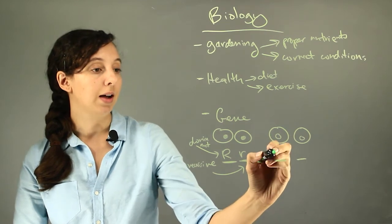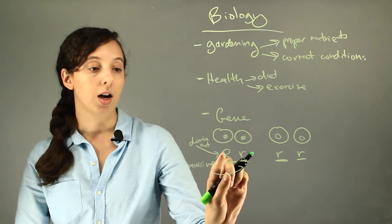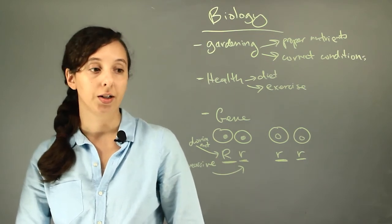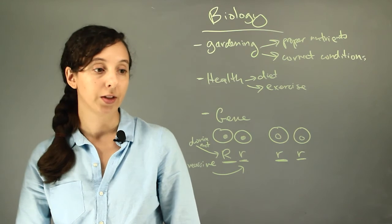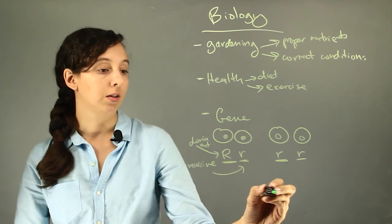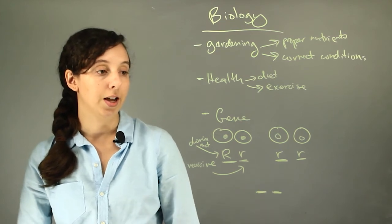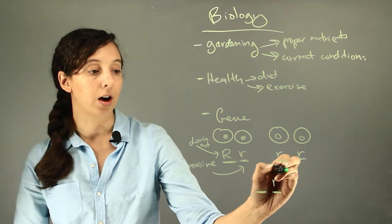And so if you have blue eyes you have to have both recessive genes because if you have one uppercase or a brown gene it's basically like a trump card so you won't be able to have those blue eyes anymore. So if these people have a kid, the kid is going to get one from each of them and it's definitely going to get one of these little r's because that's all this parent has to offer.